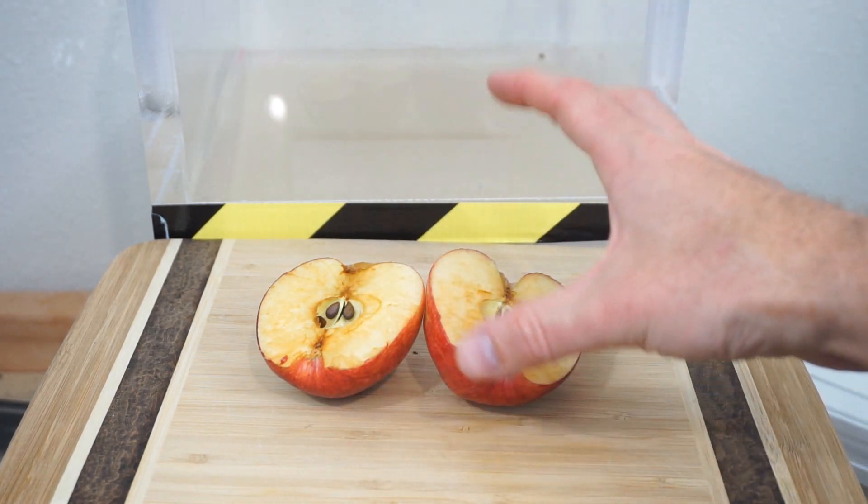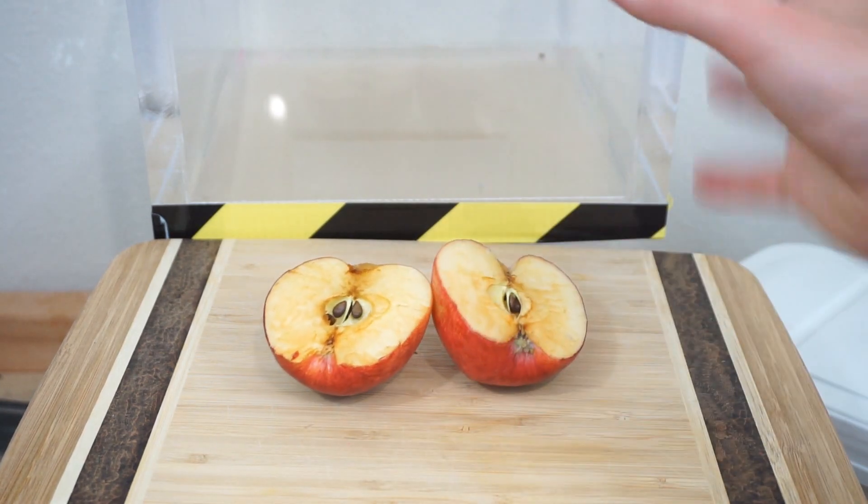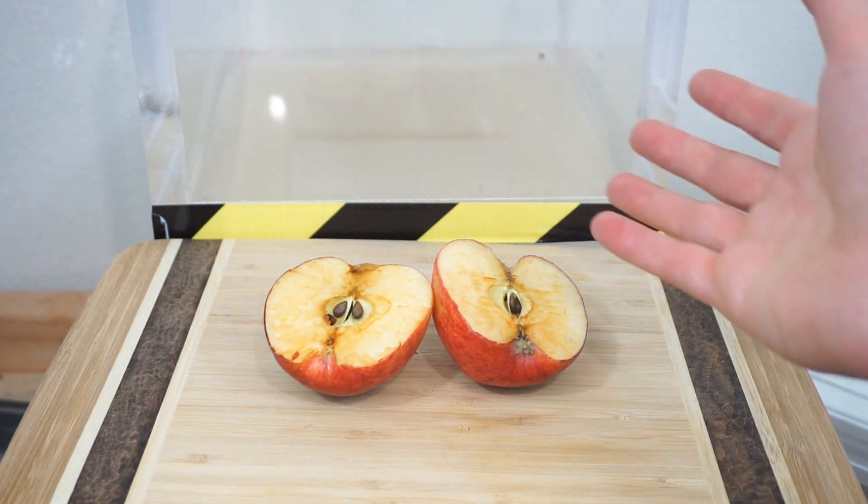So mold and aerobic bacteria need oxygen to live. So when there's no oxygen in there, the food can't spoil or go bad.